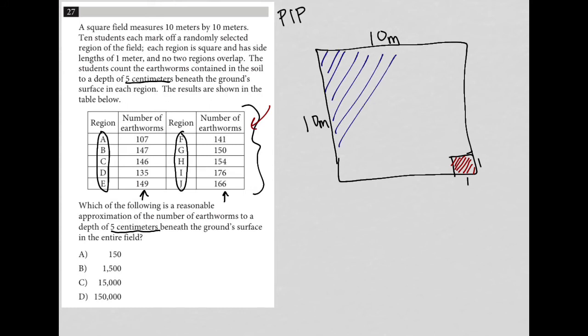And we're using the count from these 10 small squares to approximate the number of earthworms found in the entire field. So what our table lets us know is that the number of earthworms that were counted are somewhere between 107 on the low end, which we saw in region A, to exactly 176 on the high end, which we saw in region I.